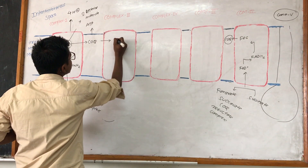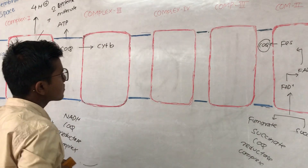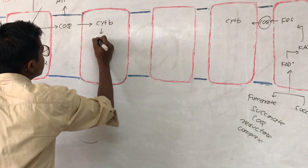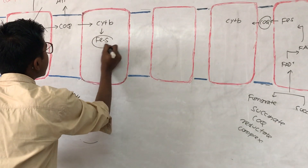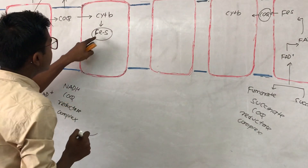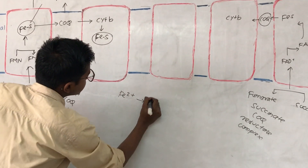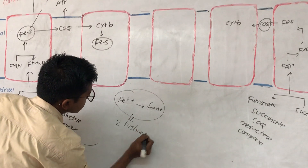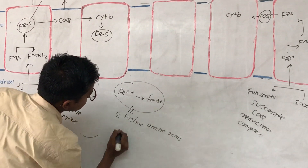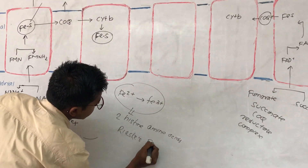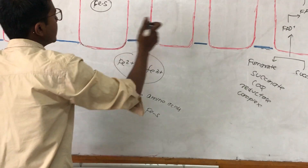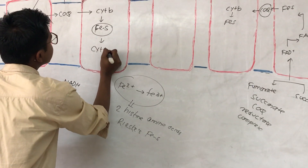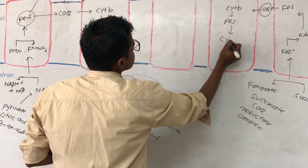Coenzyme Q donates its electron to cytochrome b. Cytochrome b transfers the electron to an iron-sulfur complex — but this is a different iron-sulfur complex. In this complex, iron spans from Fe²⁺ (ferrous) to Fe³⁺ (ferric) form, and the iron is associated with two histidine amino acids. It is also known as the Rieske Fe-S complex.